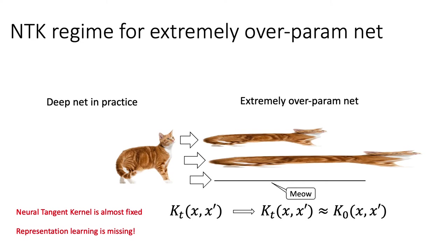On the other hand, if we look at this funny stretched cat, it represents extremely overparameterized deep net without representation learning. In overparameterization theory, kernels or features do not change much during training. So there is no significant effect of representation learning.